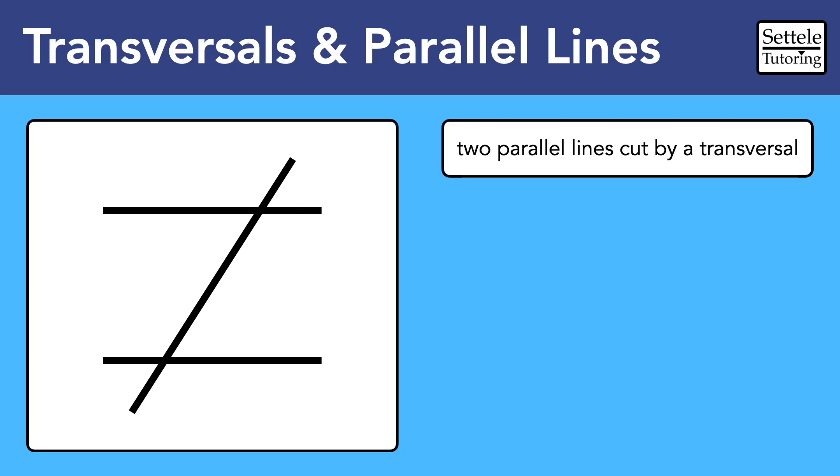This is one of the most common shapes for SAT geometry questions. The technical name is two parallel lines cut by a transversal. For most people, it just looks like the letter Z.